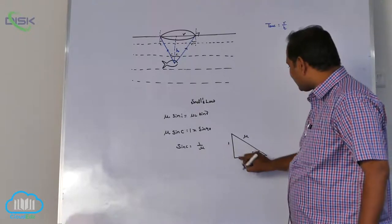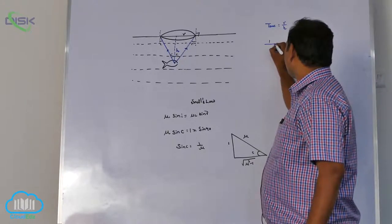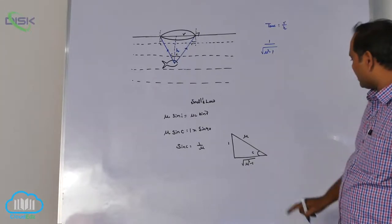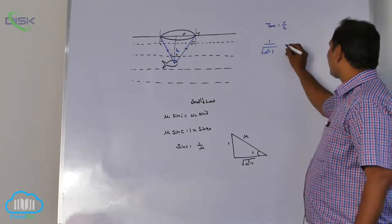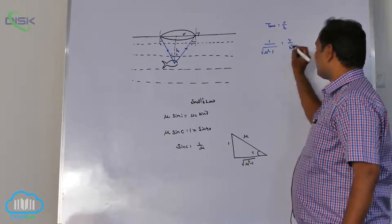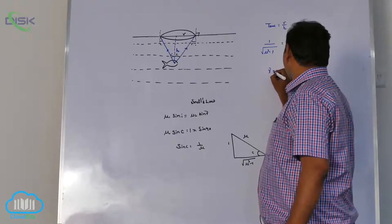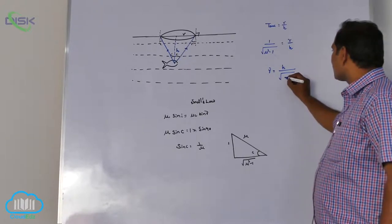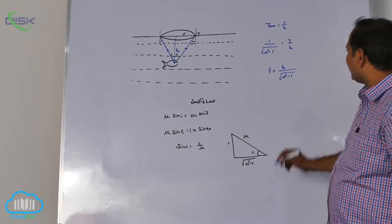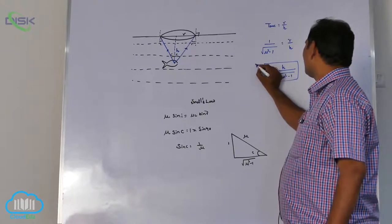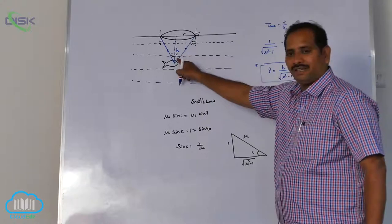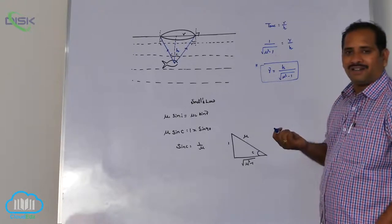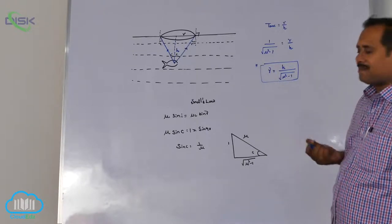According to this, tan C equals 1 upon root of mu square minus 1, which equals R by H. Radius of the cone: R equal to H upon root of mu square minus 1. They can ask you this also: radius of the cone, apex angle 2C. Somewhat lengthy or difficult if they ask you in the conceptual way.